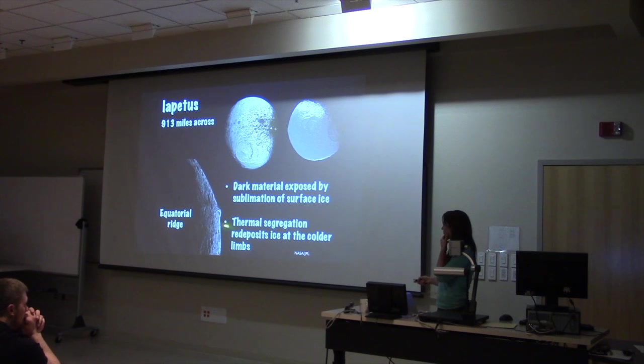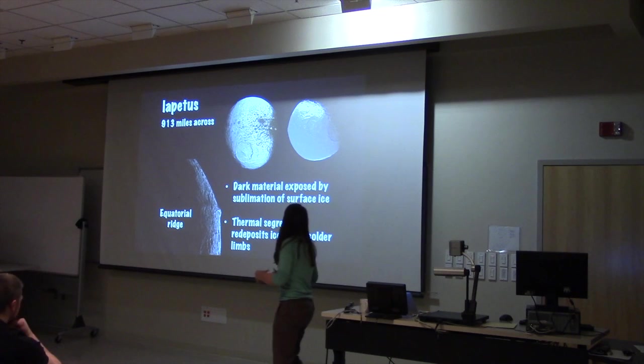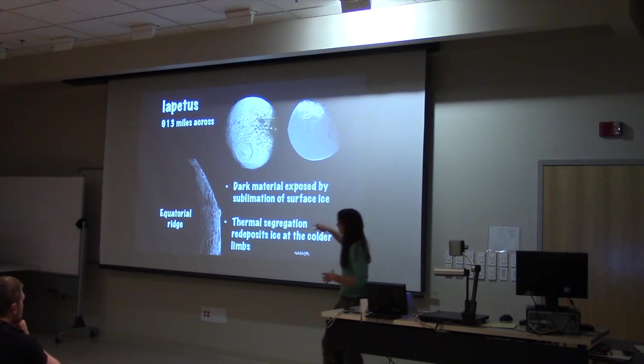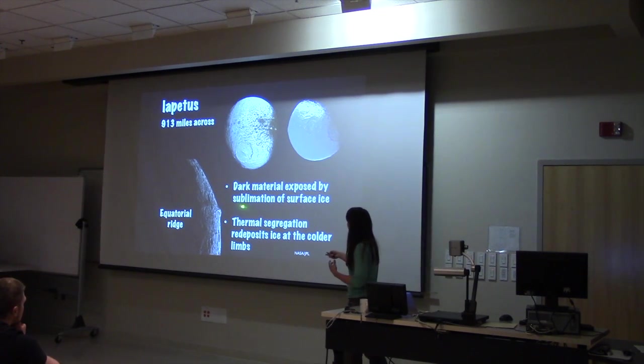Based on the Cassini data that we've collected, it's now pretty strongly thought that this is something called thermal segregation. So at some point, this side became a little bit darker. And because it's darker, it absorbs more sunlight and it heats up more. Because it's hotter, the sublimation rate goes up.